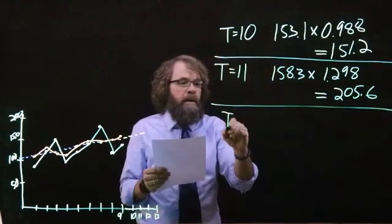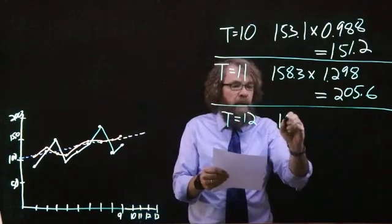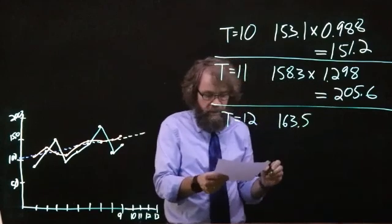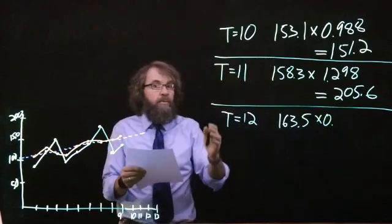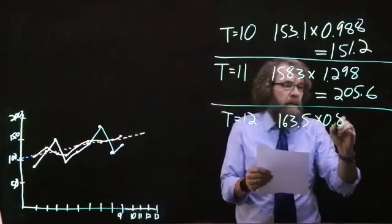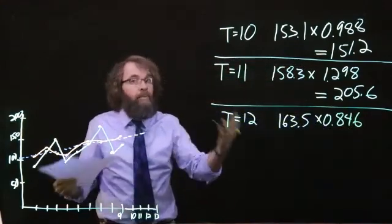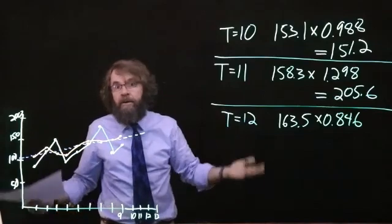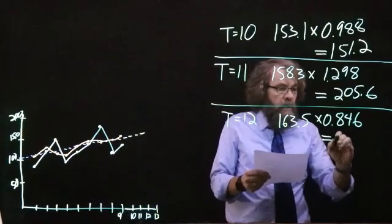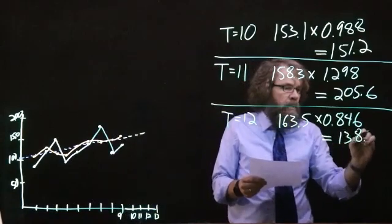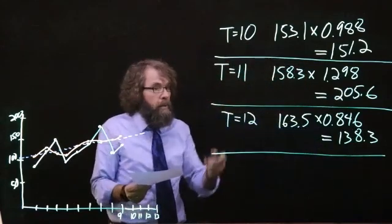For period 12, we got a straight line forecast of 163.5, and the seasonal index for period 12 is 0.846. Period 12 will be the fourth quarter of a year, so that's the seasonal index from period 4, and we get 138.3 as our final seasonalized forecast.